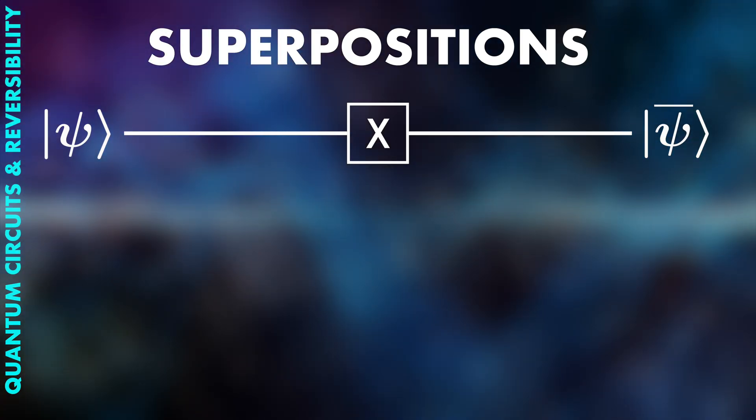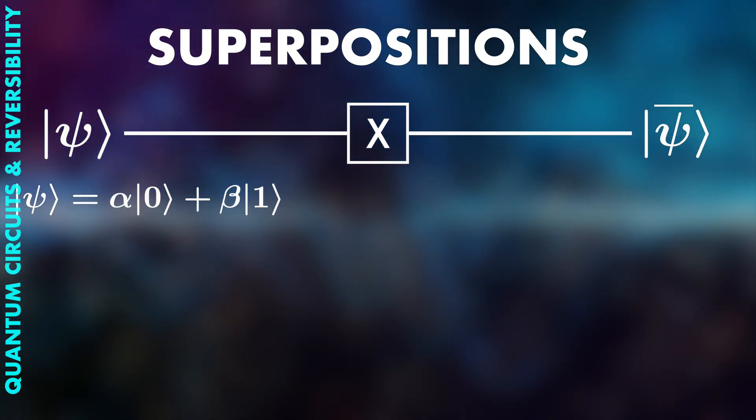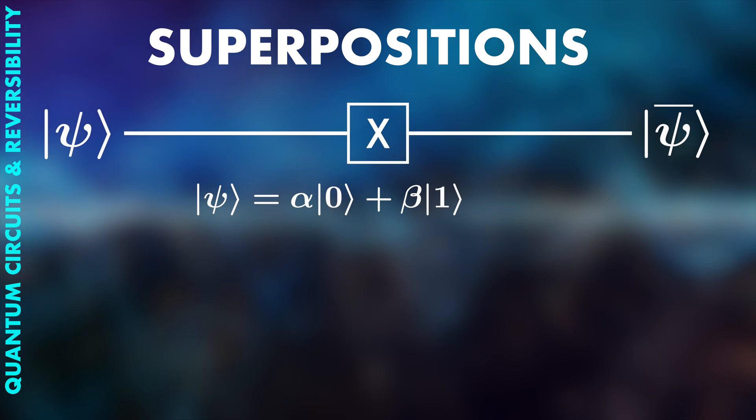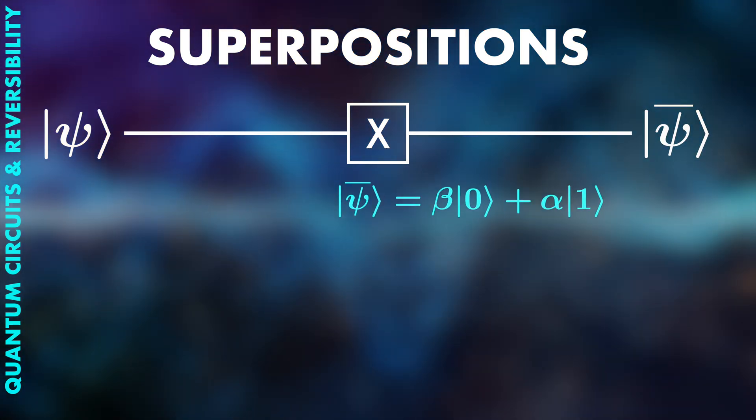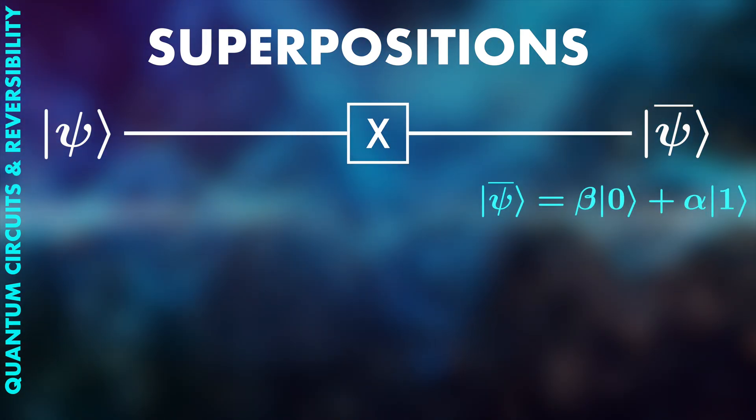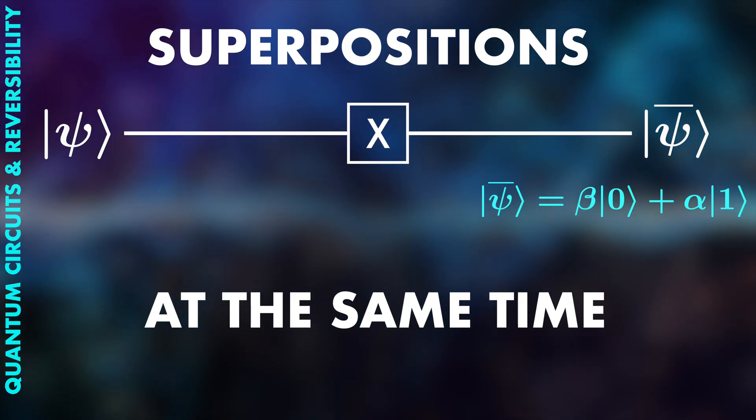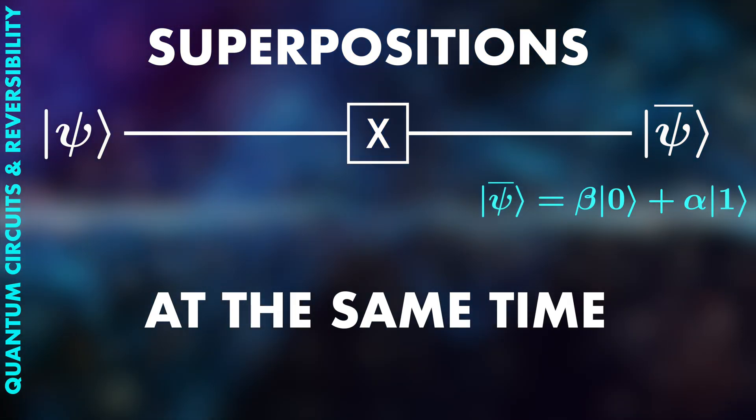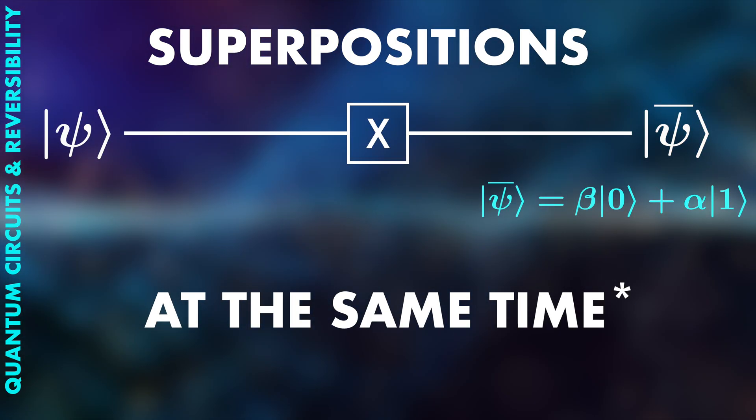Secondly, as a qubit can be in any combination of zero and one, we can run this combination through a quantum gate. And in a sense, this means running our computation on zero and one at the same time. And this may sound great, but it has important limitations that we will discuss later when we talk about measurement.